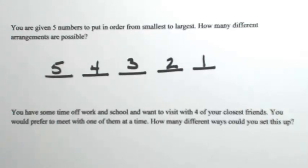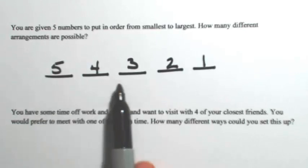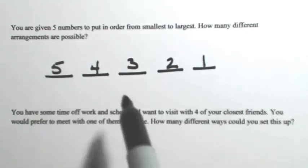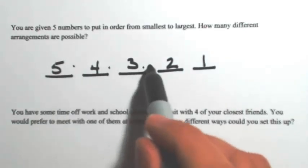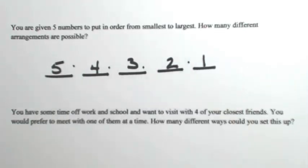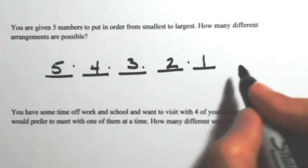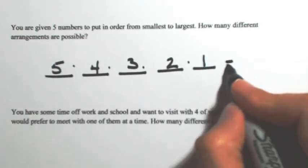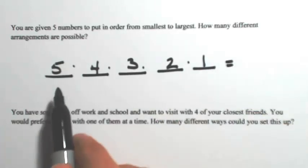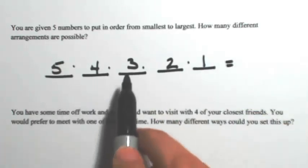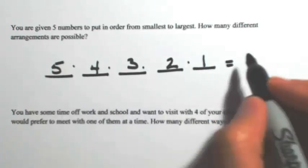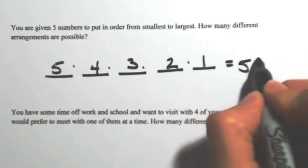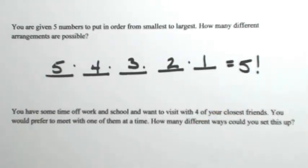Using the Fundamental Theorem of Counting, since we have a sequence of events occurring, we multiply these together to figure out how many possibilities there are. So we have five times four times three times two times one, which is the same thing as five factorial.